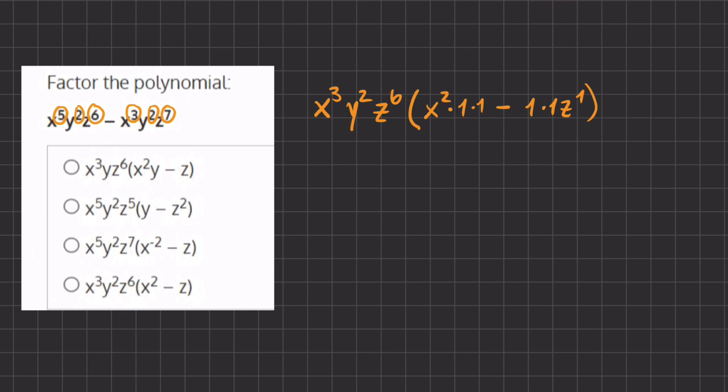All right, so now let's simplify this a little bit, and we have x to the third, y to the second, times z to the sixth on the outside. And inside our parentheses, we have x squared minus z. So this will be our final answer, and that corresponds with answer d.